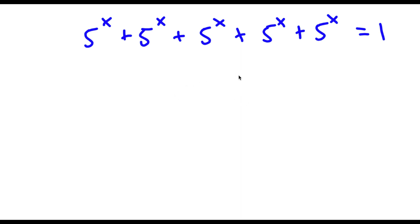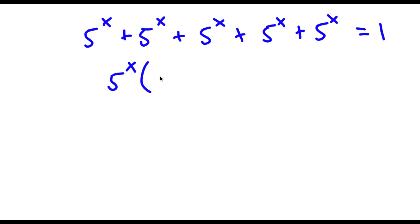We have 5 to the power of x plus 5 to the power of x plus 5 to the power of x plus 5 to the power of x plus 5 to the power of x, all equal to 1. The first thing I'm going to do is factor out 5 to the power of x. So 5 to the power of x divided by 5 to the power of x is 1, giving us 1 plus 1 plus 1 plus 1 plus 1 in parentheses.